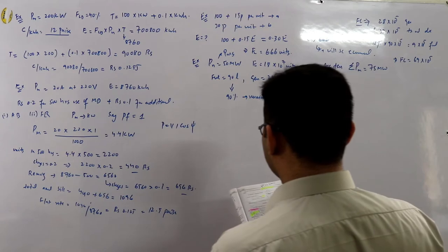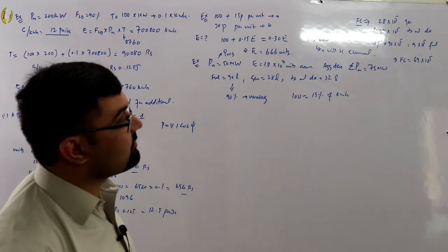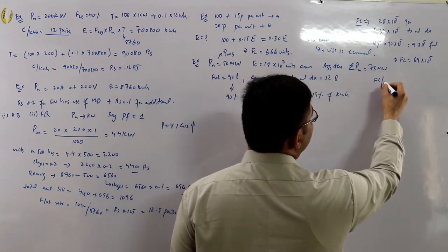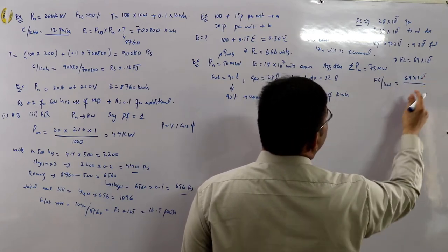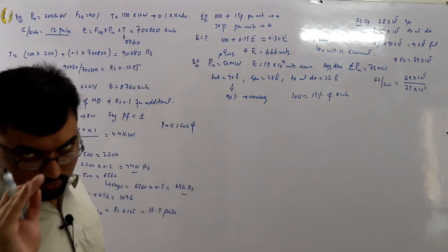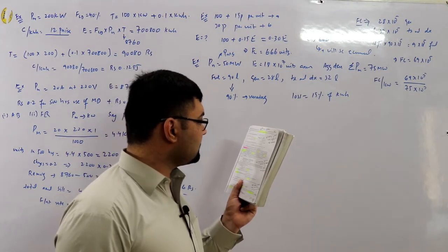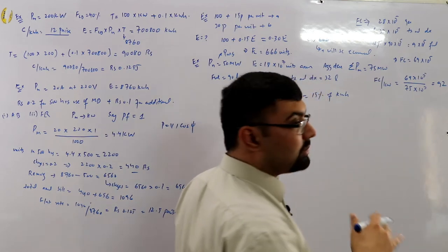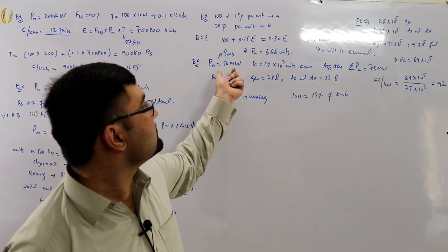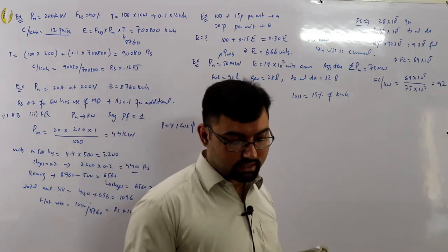This cost is spread over the aggregate maximum demand of all consumers (75 megawatts). Fixed charges per kilowatt = 69 lakhs / 75,000 = rupees 92. The diversity among consumers reduces the fixed cost per kilowatt — without diversity, this cost would be higher.